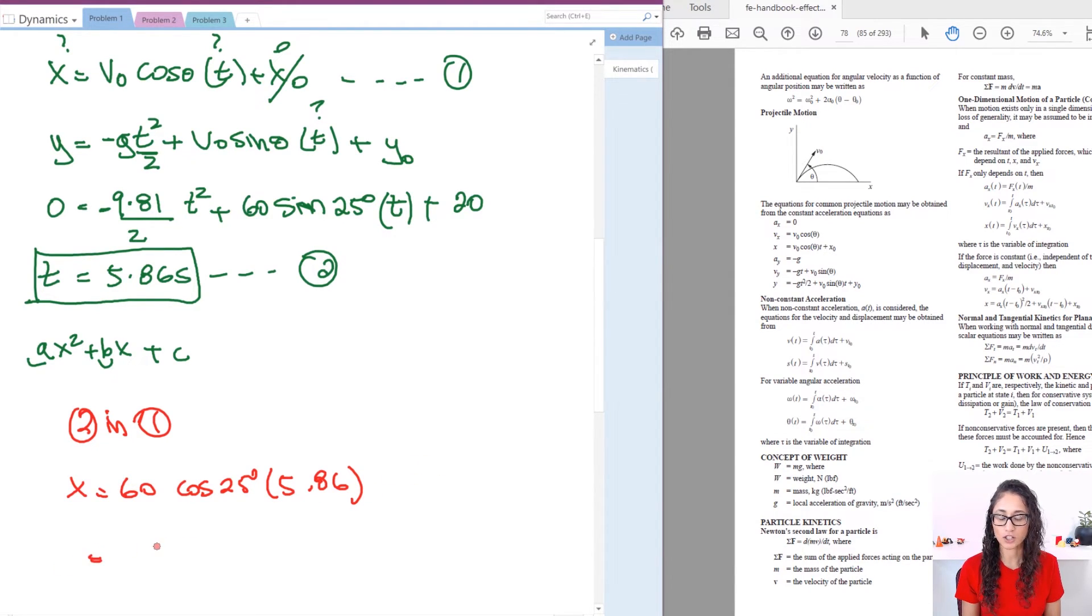And that's it. x naught is zero. So if you plug in this, you will get 318.66 meters. So this is seconds. This is meters per second. Seconds with seconds cancels, you're left with meters. So this is your distance. That's your answer.